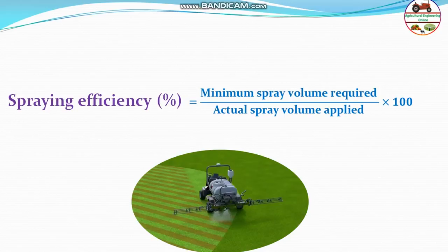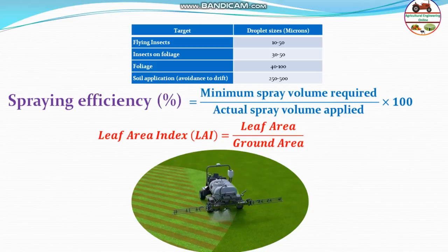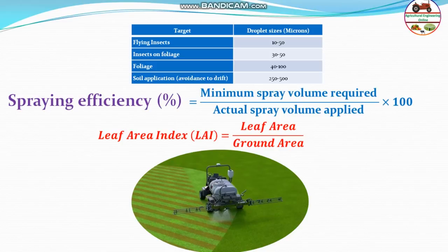Leaf area index is the area of crop under leaf divided by the ground area of the field. Droplet size varies by application type: for flying insects it is 10–50 microns; insects on foliage require 30–50 microns; general foliage coverage needs 40–100 microns; nutrient applications targeting stomata require slight overflow; and soil application requires 250–500 micron particles.